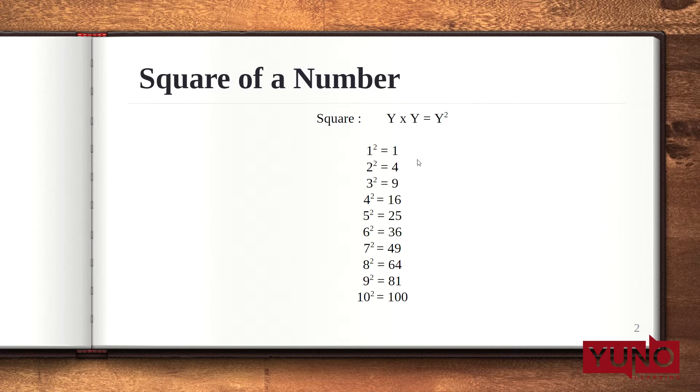So, the square of 1 is 1. Square of 2 is 4. Square of 3 is 9. Square of 4 is 16. Square of 5 is 25. Square of 6 is 36. Square of 7 is 49. Square of 8 is 64. Square of 9 is 81. And square of 10 is 100.